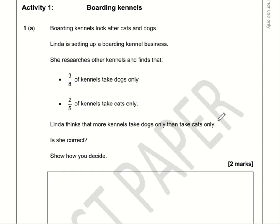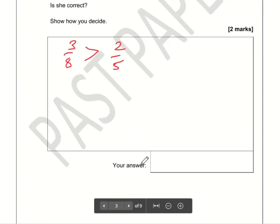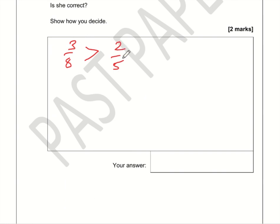Linda thinks that more kennels take dogs only than cats only. So the question is: is three-eighths bigger than two-fifths? That's what Linda thinks — is she right? We can't compare three-eighths and two-fifths directly because the denominators are different.